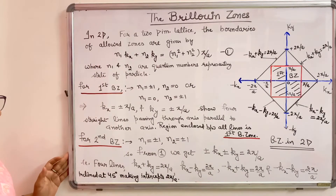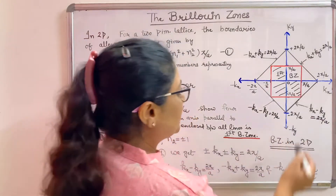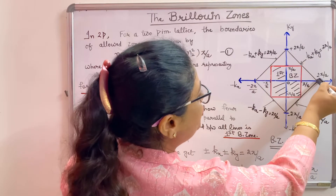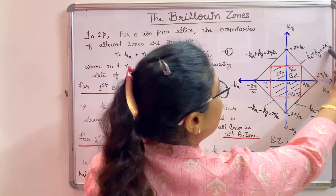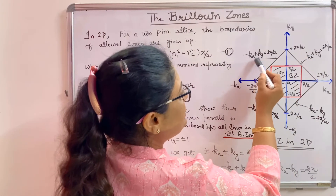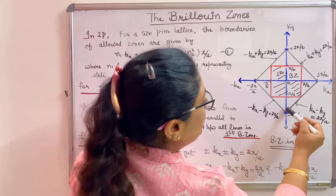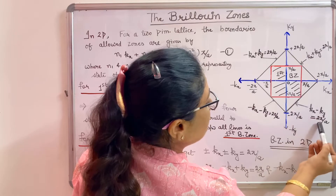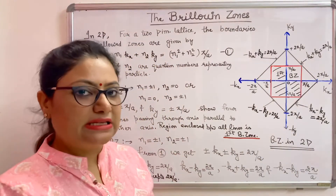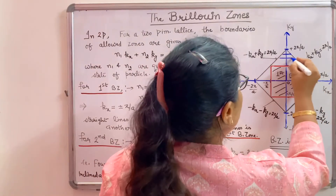These four equations represent four lines inclined at 45 degrees to the axes, making intercepts of 2 pi by a. On the diagram: kx plus ky equal to 2 pi by a, minus kx plus ky equal to 2 pi by a, minus kx minus ky equal to 2 pi by a, and kx minus ky equal to 2 pi by a. The region enclosed between these four lines, excluding the first Brillouin zone, represents the second Brillouin zone, which consists of four regions.